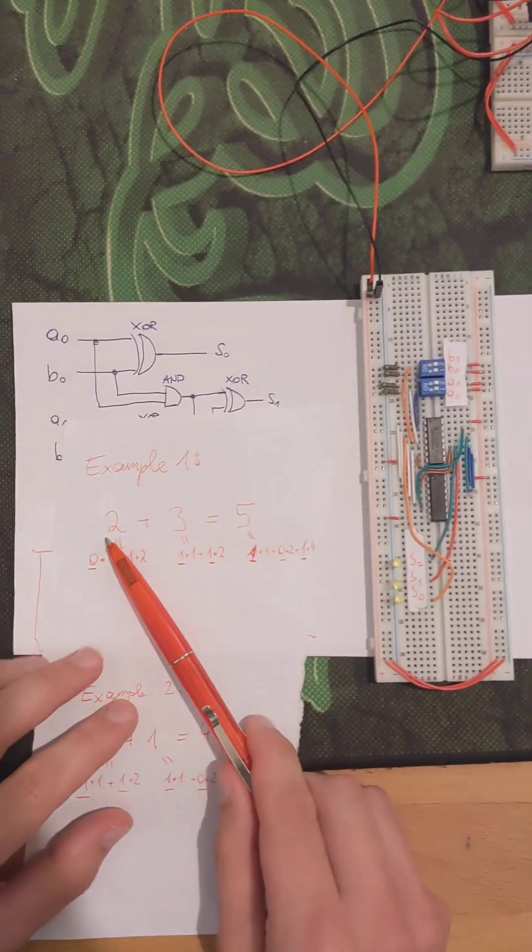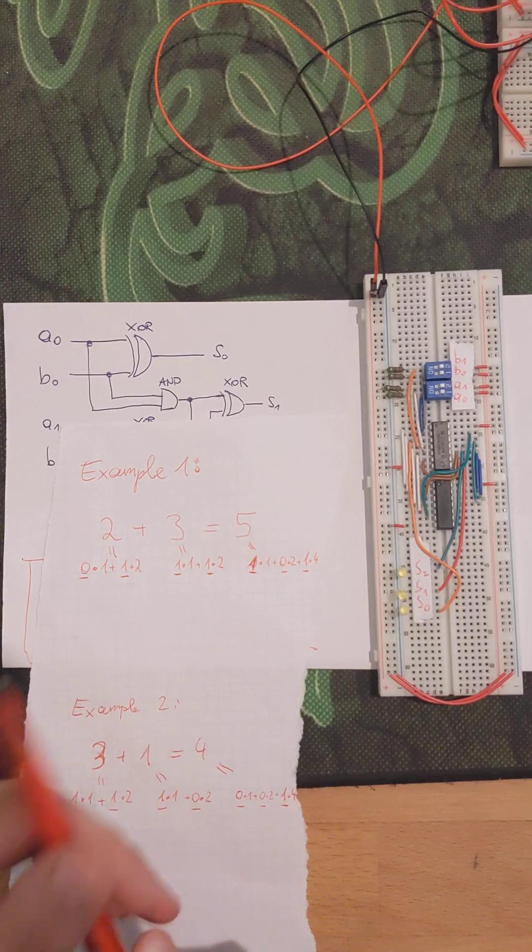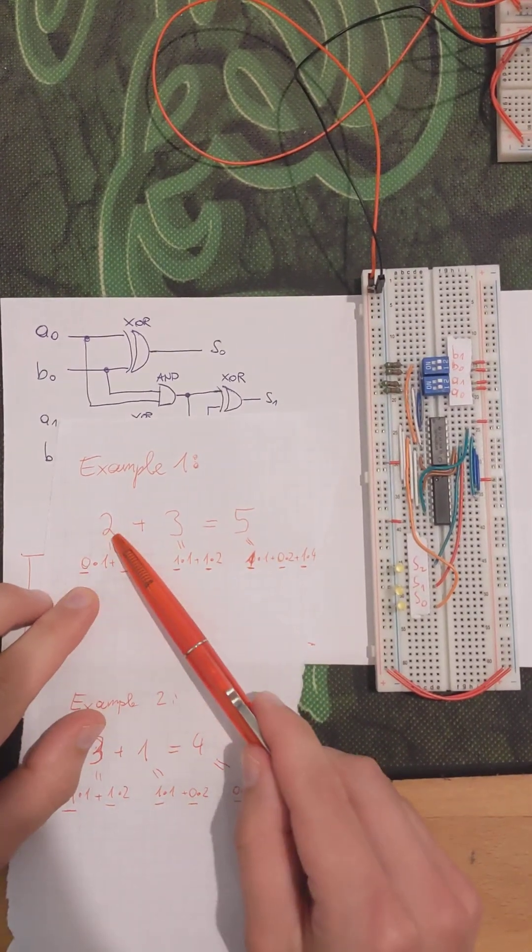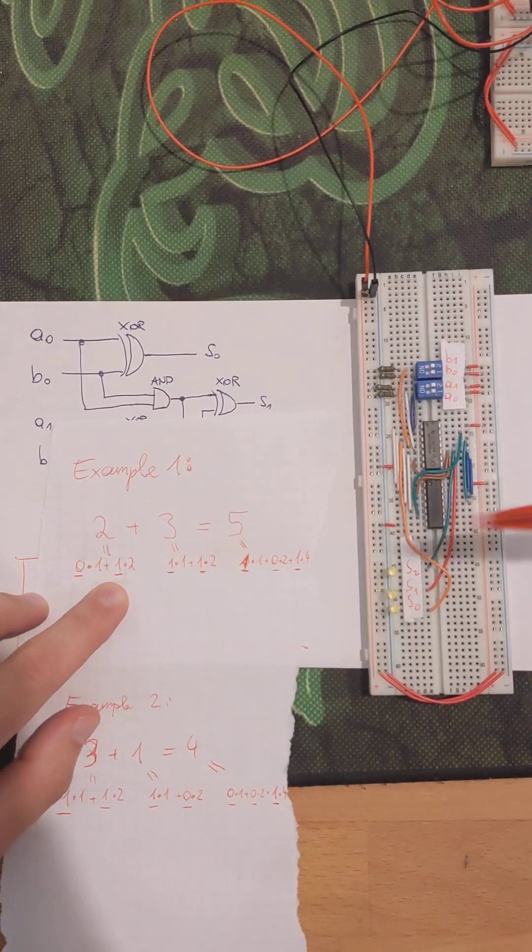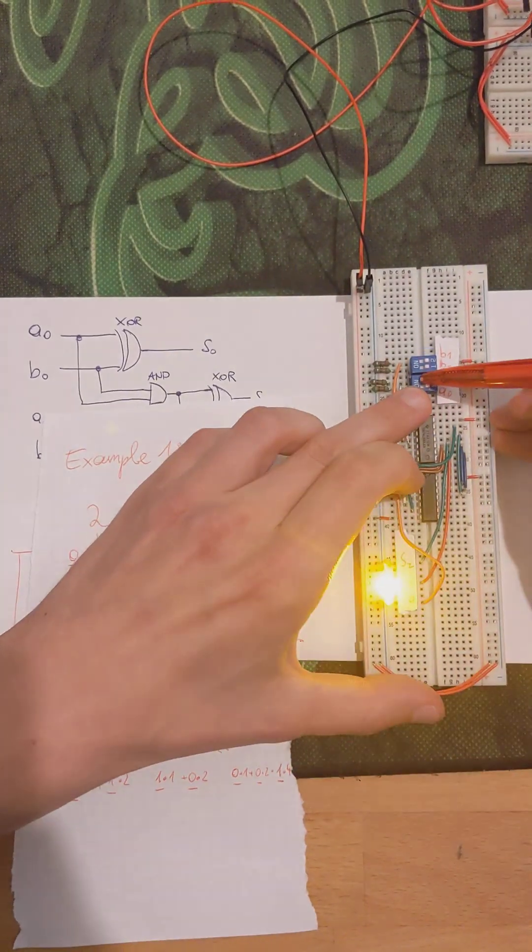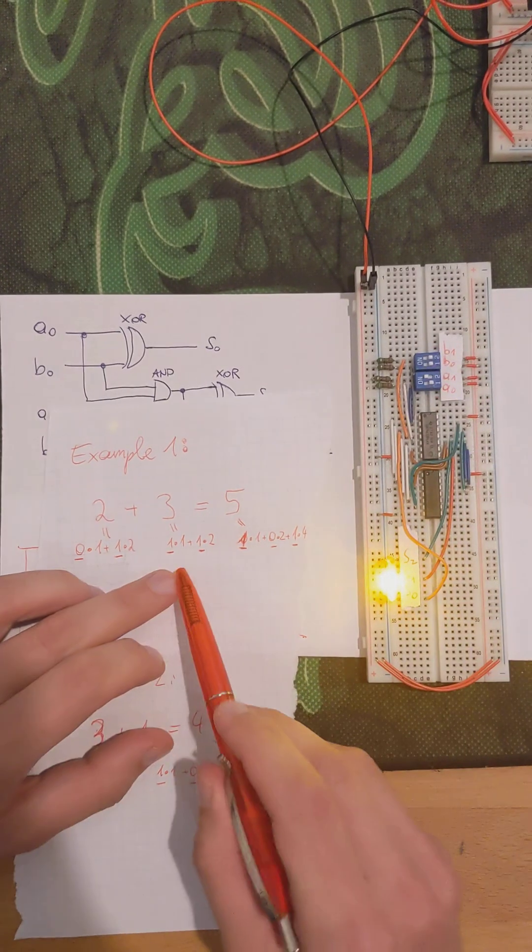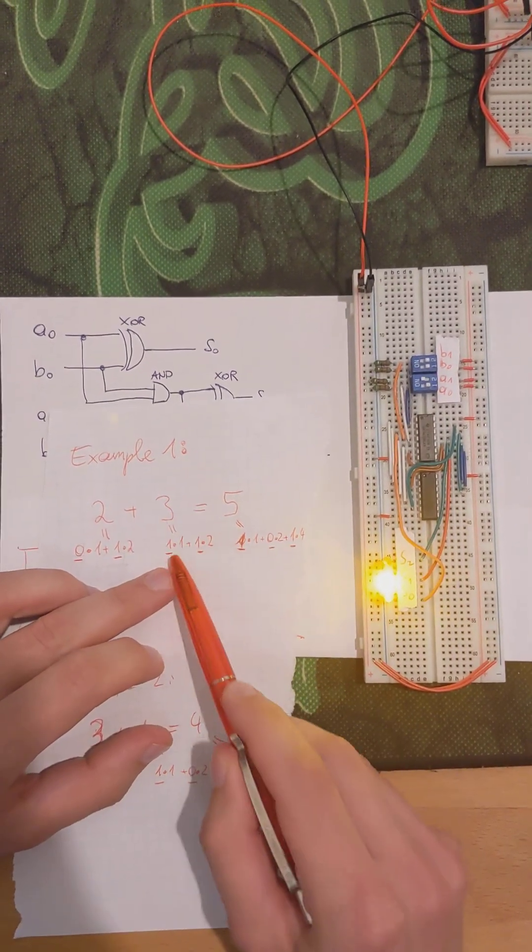If you look at 2 plus 3 equals 5, I have to encode 2 as 0 times 1 plus 1 times 2, so A1 will be set to true. And B is 3, so this is 1 plus 2, so both B0 and B1 will be true.